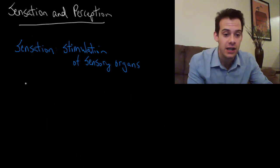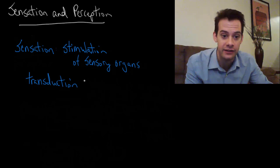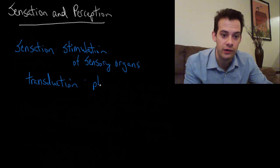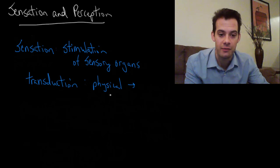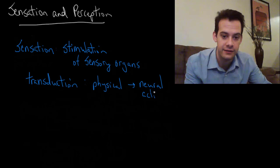For each of our senses, we're going to have a process of transduction. Transduction refers to the translation into the language of the brain, into neural activity. So transduction is the term we use to refer to this conversion from a physical signal in the world into neurons firing in the brain.